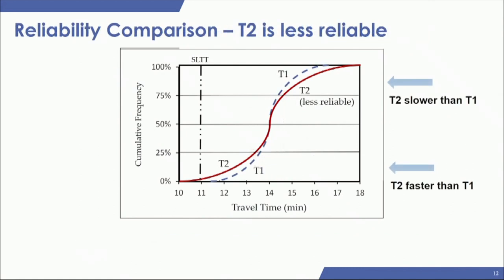Here's another example for time period one and two. T2 goes faster up to about the 25th percentile, then gets slower at the 75th percentile, so congestion severity differs. But in terms of reliability, T1 has a steeper slope between the 25th and 75th percentile, giving a smaller IQR — meaning T1 is more reliable. So you can have differences in both reliability and congestion depending on where you are in the curve.